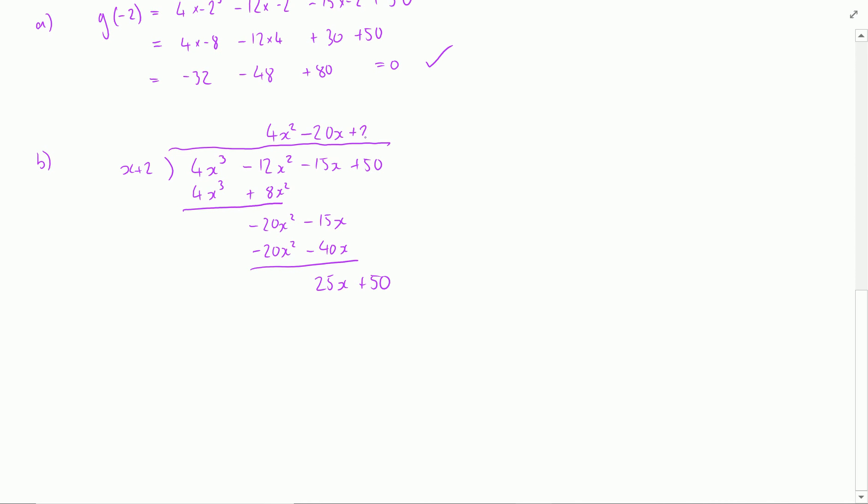So then we've got plus 25 as our next bit because 25x and then 25 times 2 would give me the 50 is going to give me no remainder whatsoever. So what I'm saying here is that g of x can be written as x plus 2 lots of 4x squared minus 20x plus 25.